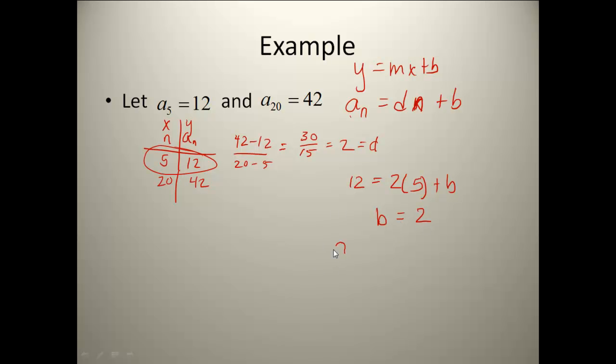Then my rule would be a sub n equals 2n plus 2. And you can always check these. You can plug the 20 in here and make sure it gives you back 42. And then you can plug the 5 in there, take your 2 times 5 plus 2 and make sure it gives you back 12. In each case it does, so we know our rule is right.